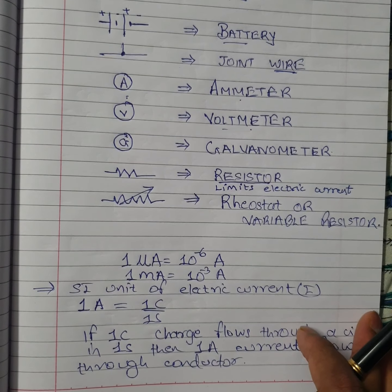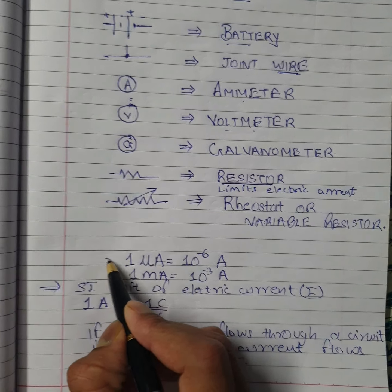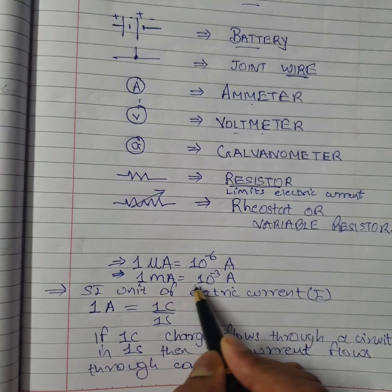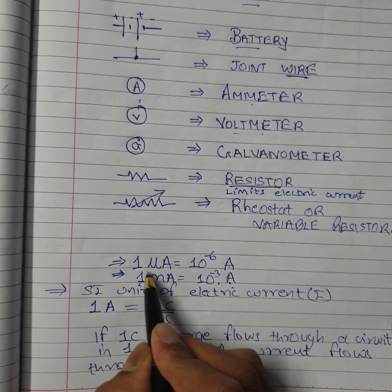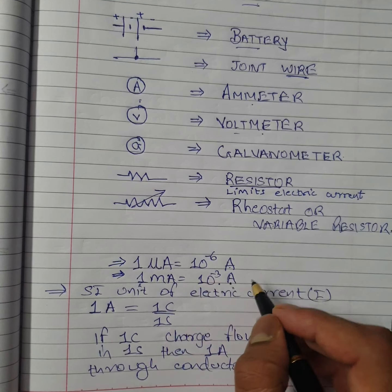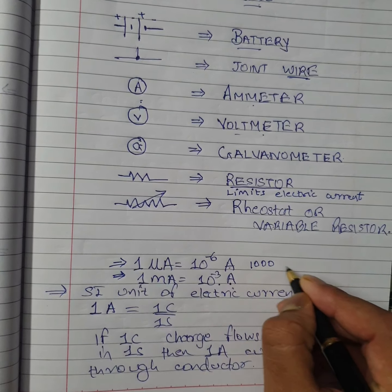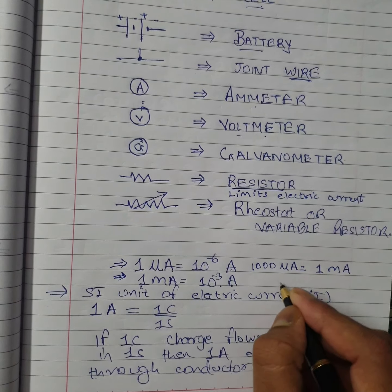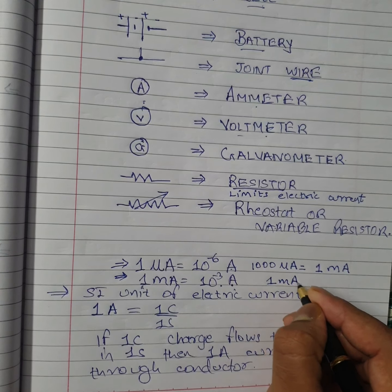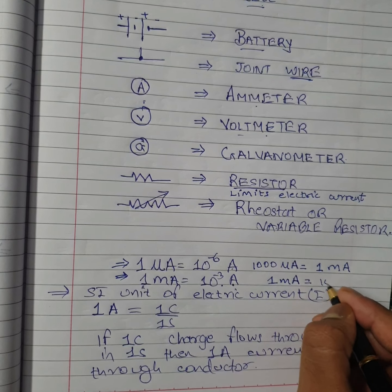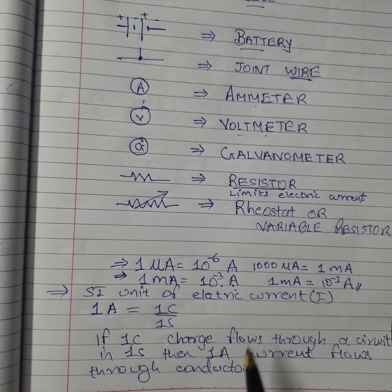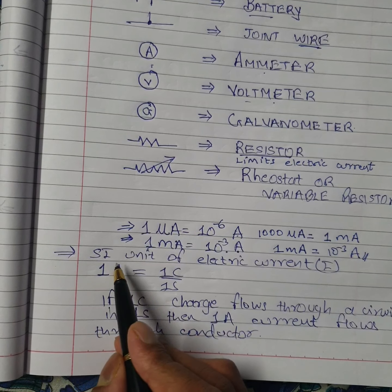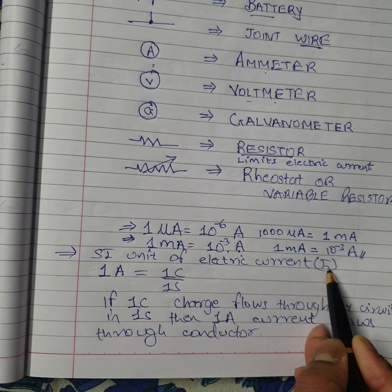Two sub-units of ampere are defined: one microampere equals 10⁻⁶ ampere, and one milliampere equals 10⁻³ ampere. These are used to interconvert units of current. For example, 1000 microamperes equals one milliampere, which equals 10⁻³ ampere.